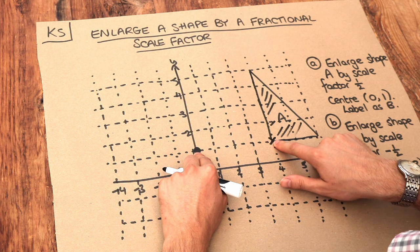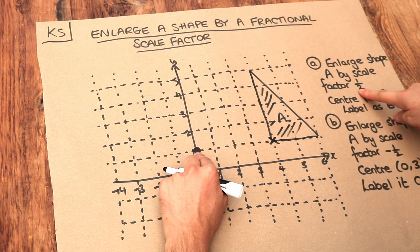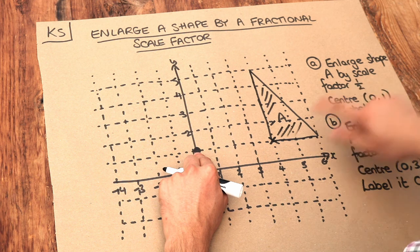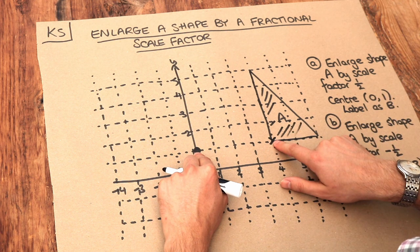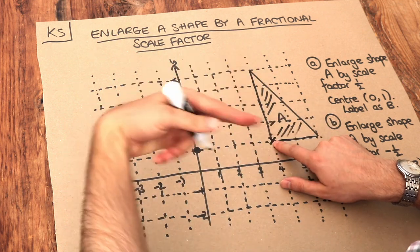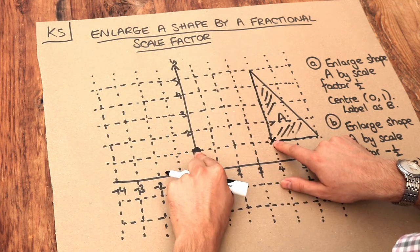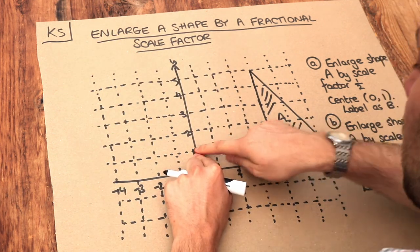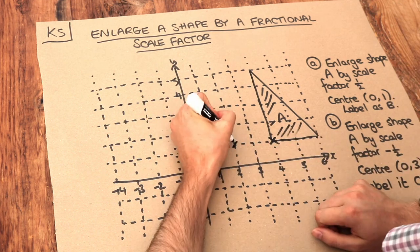We multiply each count by the scale factor of half. What is 4 multiplied by half? 4 times half is the same as half of 4, which is 2. So the 4 right becomes 2 right, and that's our new point.